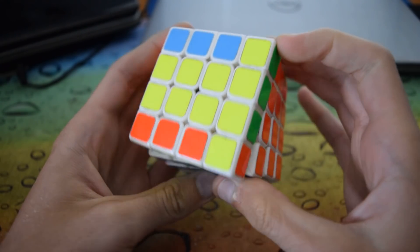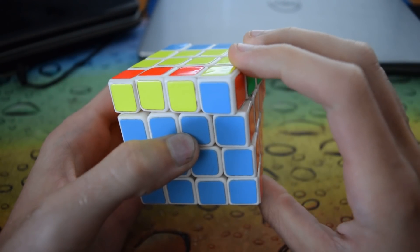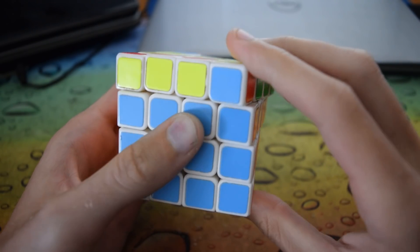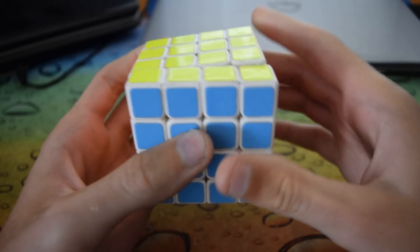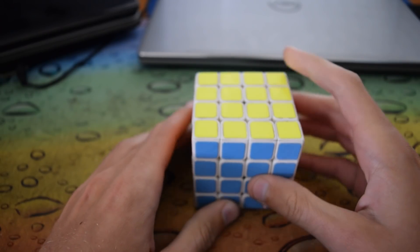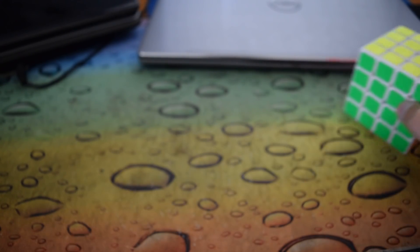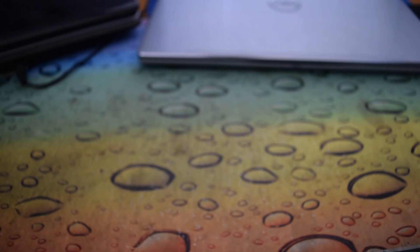Then a U, and as you can see, if you do the second half of the Y perm now, your cube will be solved. So that's a pretty common 4x4 PLL parity case that you should know.